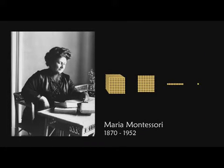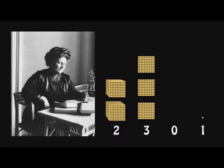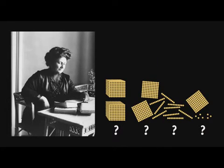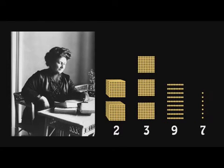Maria Montessori used manipulatives to teach mathematics to children. Does her number system use place value like a Chinese abacus, or is it more similar to the ancient Egyptian number system? The first clue is that, like the ancient Egyptian number system, it lacks a symbol for zero. The second clue is that, like the ancient Egyptian number system, you could drop all the blocks and someone could still figure out what number you had built. Here I've scrambled them all — can you figure out what number I had built? Of course you can. The number is 2,397.